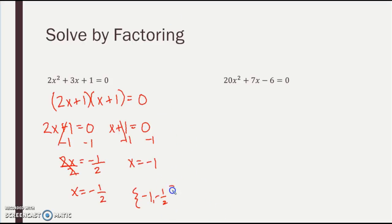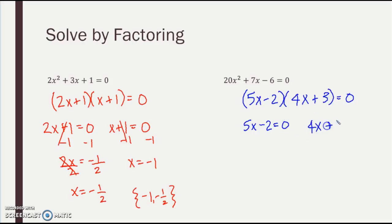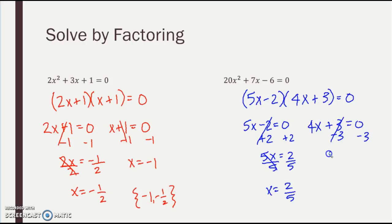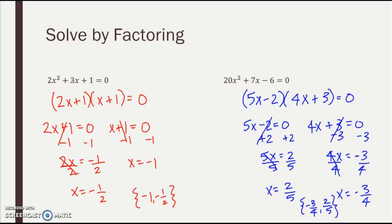For the second example, we found it was 5X minus 2 times 4X plus 3. Set both factors equal to 0. Add 2: 5X equals 2, divide by 5 — X equals 2 fifths. Subtract 3: 4X equals negative 3, divide by 4 — X equals negative 3 fourths. So my solution set is negative 3 fourths and 2 fifths. Same process as before — you might have to add or subtract and then divide.